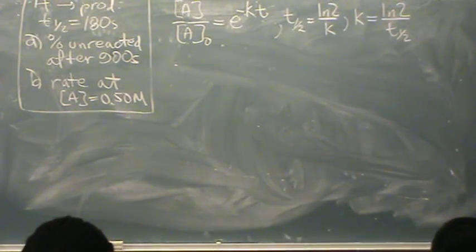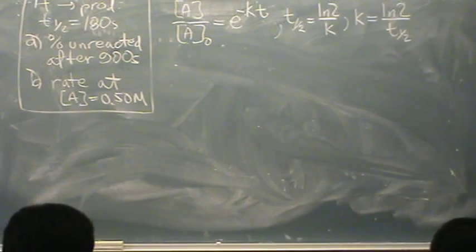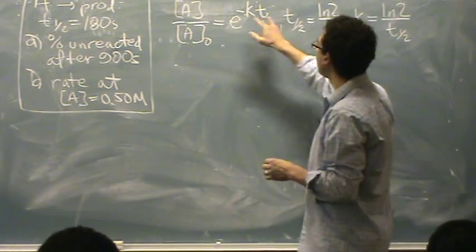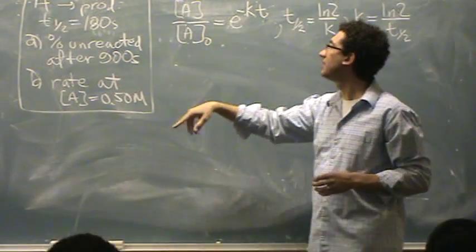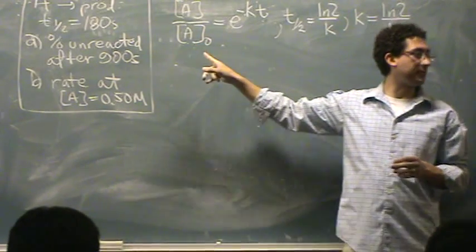So again, it's really common for us to give you the half-life, and the only thing you need to do with it is find k. So I can find k, I have t, I want the percent unreacted. Basically, I want this number times 100.